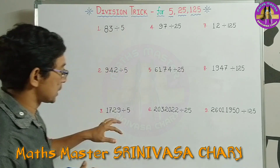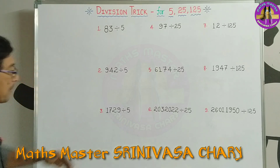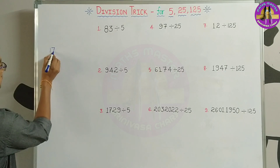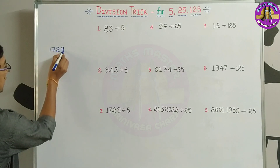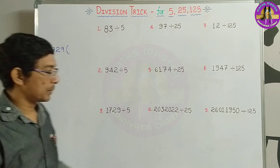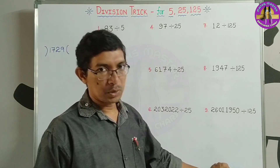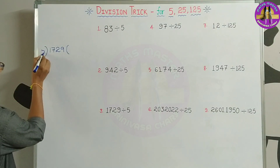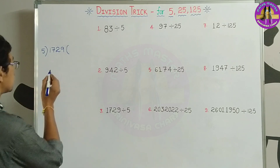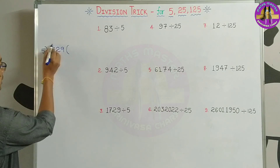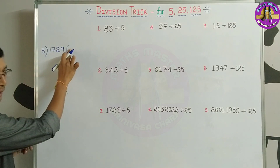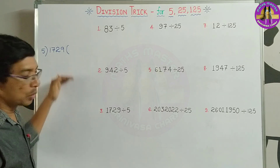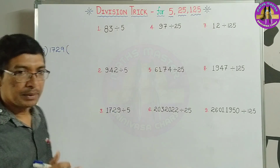Now I am taking 1729. Let's take the third problem to explain. Let's take the 5th division. This is a divisor. The first one is quotient. The last one is remainder. If we continue to write the remainder, we will write the non-terminating decimal.